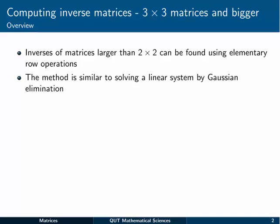But for those larger than 2×2, 3×3s, 4×4s and so on, we can find the inverse matrix using elementary row operations, the same ones that were used in Gaussian elimination. And the method is actually very similar to Gaussian elimination, it's just a little bit more work.